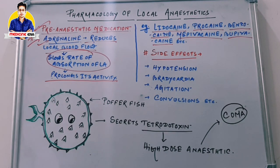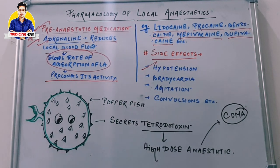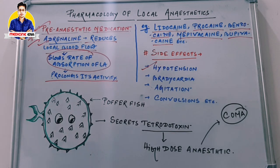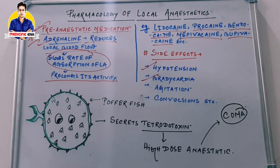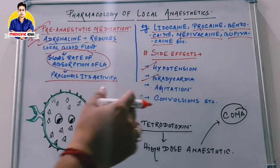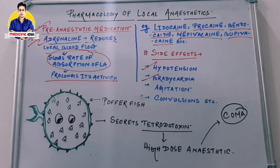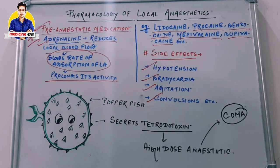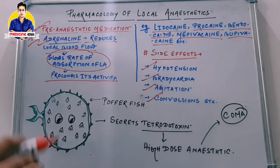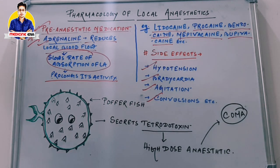The side effects of local anesthetics include hypotension — blood pressure decreased from the normal level — and bradycardia, meaning the heart rate is decreased, which is also part of cardiac arrhythmia. Agitation and convulsions are also reported as side effects, which are associated with epileptic seizures. These are the main side effects of local anesthetics.